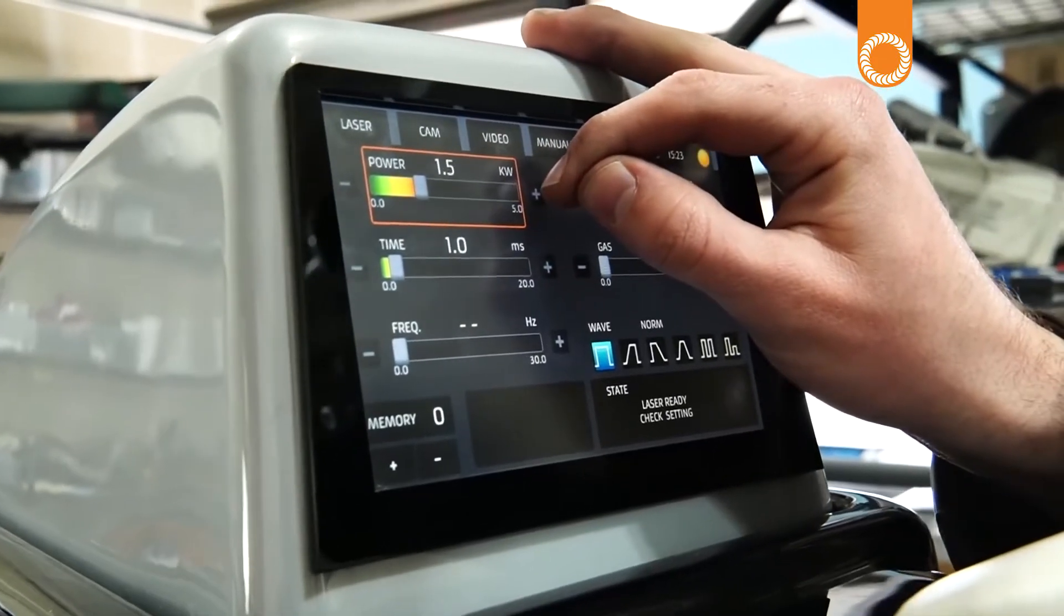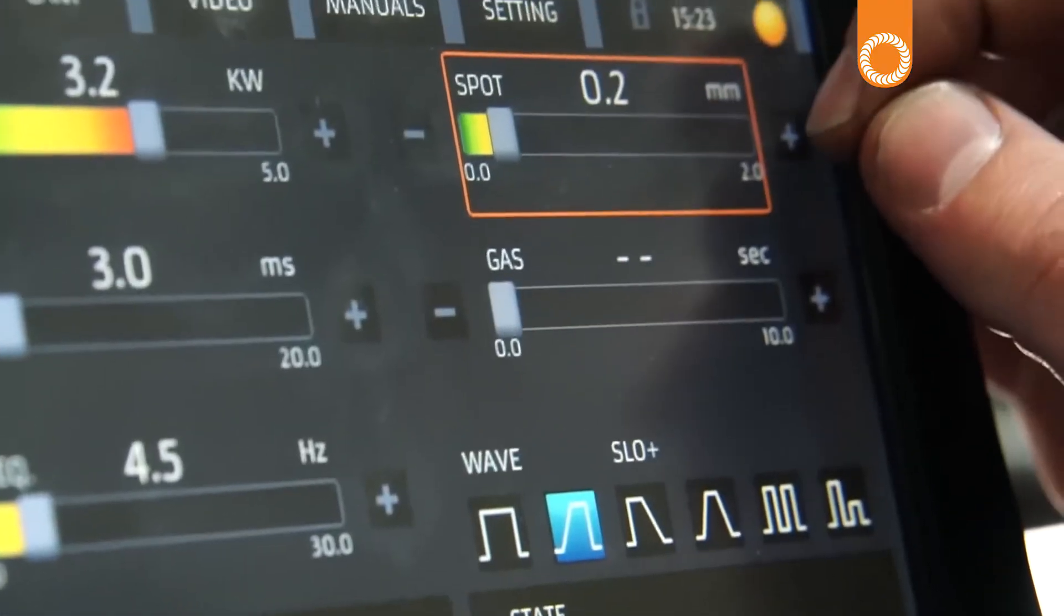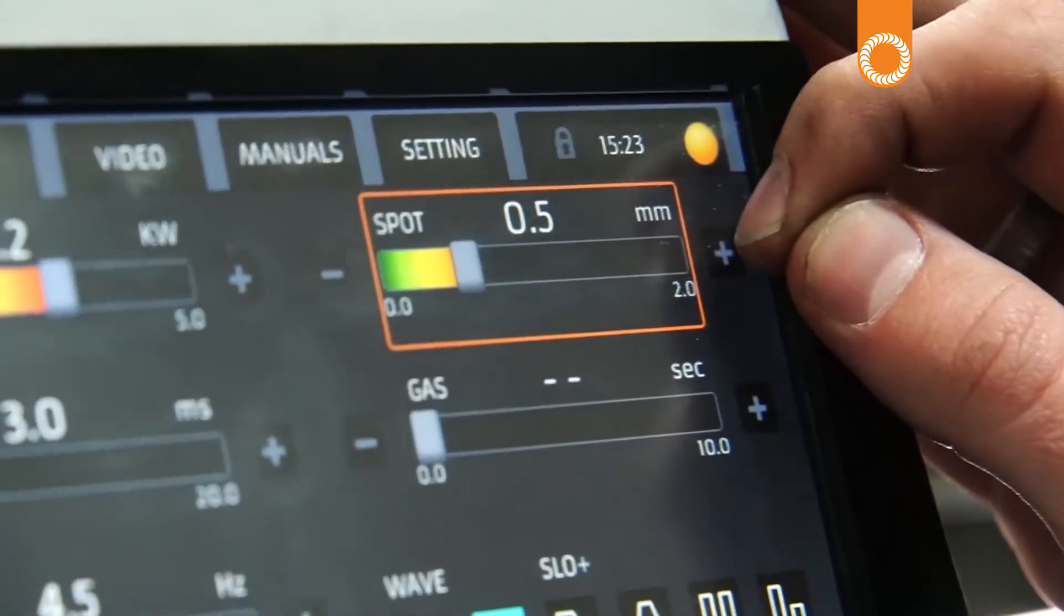Now I'm switching the settings on the laser welder to work well for copper. Copper is a little bit tricky because it's so conductive that it just sucks all the heat away from it.